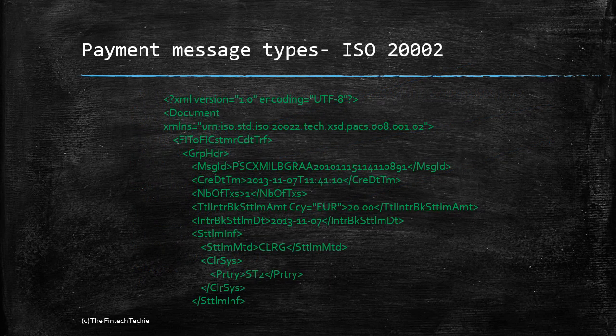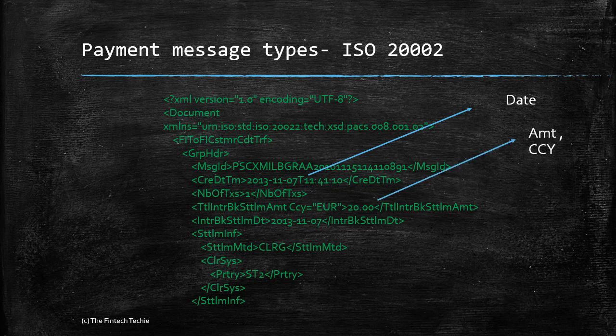Similarly, an example of an ISO 20022 message shows tags for dates and a placeholder for the amount, among other things.